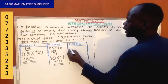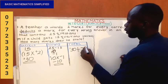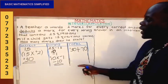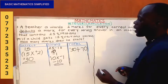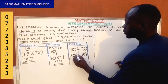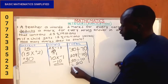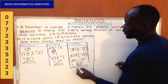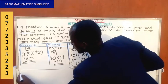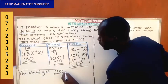Now we get the total marks scored. We add the marks he got from correct answers and the marks he got from wrong answers. The marks from wrong answers plus the marks from correct answers: 30 plus negative 10. Positive times negative gives you negative, so this equals 20.